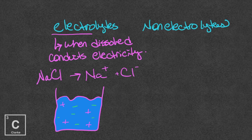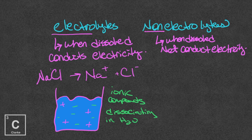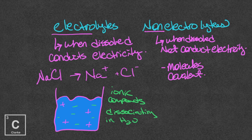Ionic compounds are very good electrolytes, and it all comes down to ionic compounds completely disassociating in water. Non-electrolytes — the prefix non means against, opposite, no. These are compounds that when dissolved in water are not going to conduct electricity, not conducting electricity because they don't disassociate. What types of compounds do not disassociate? Molecules — covalent molecules. Anything held together with a covalent bond sharing those electrons: no disassociation, no conducting electricity.